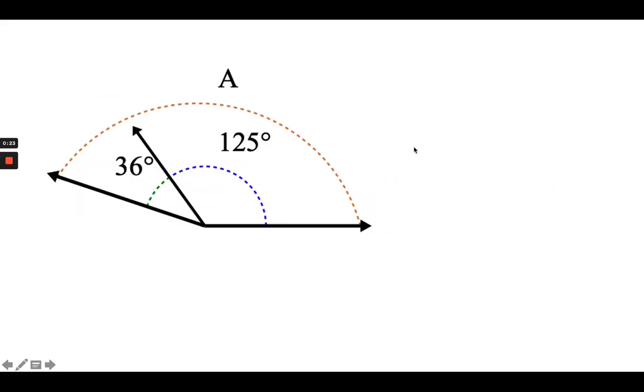So this first problem here shows a few angles put together. You can see this green angle right here measures 36 degrees and this blue angle here measures 125. If I want to compose these two angles together or figure out the total measure, I could add 125 plus 36 to get 161. So angle A, which would be both of these angles together, measures 161 degrees.